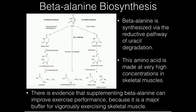Uracil is going to be reduced to dihydrouracil by dihydropyrimidine dehydrogenase. Dihydrouracil is then going to be hydrolyzed open — a ring-breaking reaction — by dihydropyrimidinase, which is a hydrolase. Then the enzyme beta-ureidopropionase is going to remove ammonia and carbon dioxide, leaving behind beta-alanine, the only beta-amino acid that we can synthesize de novo. There might be some others that are very minor, but this is the most important one.